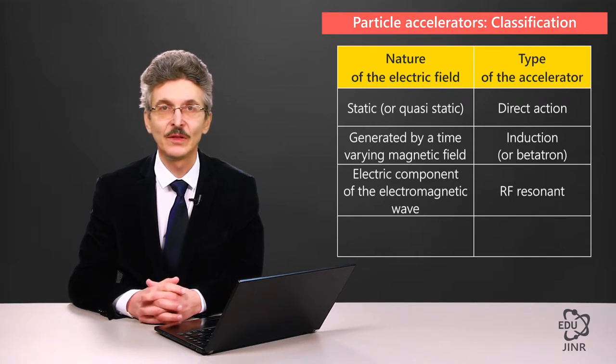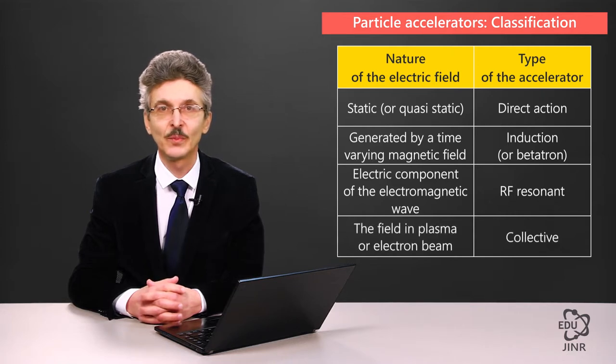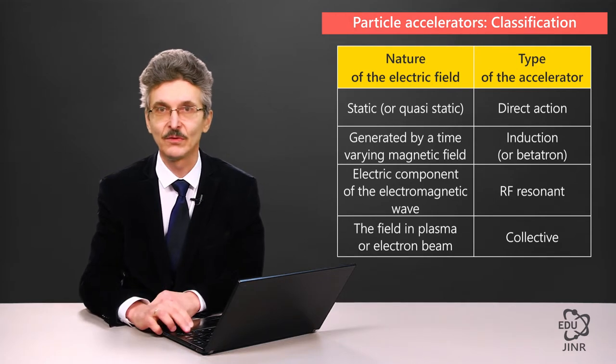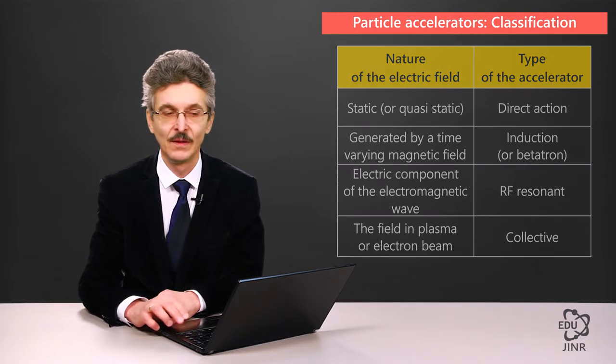Besides this classification, there is an additional type of accelerator, the operation principle of which is based on the use of electric fields emerging in electron beams or in plasma. They are the so-called collective accelerators, which have actively been under development in recent times.